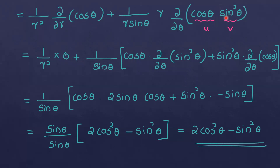Applying the product rule to the θ term: let u equals cosθ and v equals sin squared θ. Then u into v-dash plus v into u-dash. That equals 1 by sinθ times cosθ into derivative of sin squared θ, where the derivative of sin squared θ is 2 sinθ.